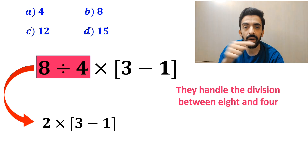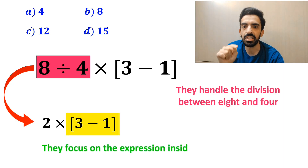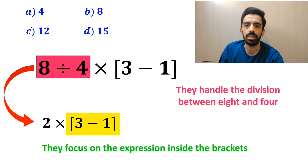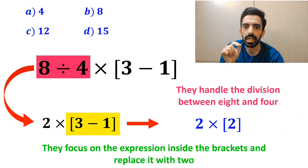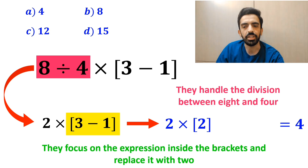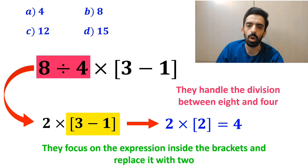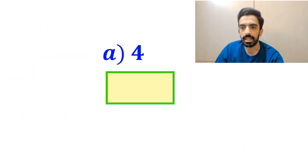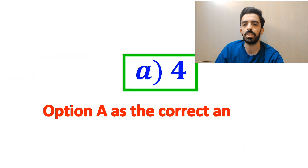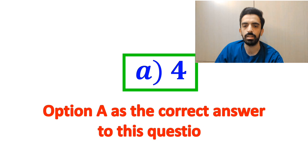In the final step, they focus on the expression inside the brackets and replace with 2. So this expression becomes 2 multiplied by 2, which equals 4. Then they quickly look at the options and choose option A as the correct answer to this question.